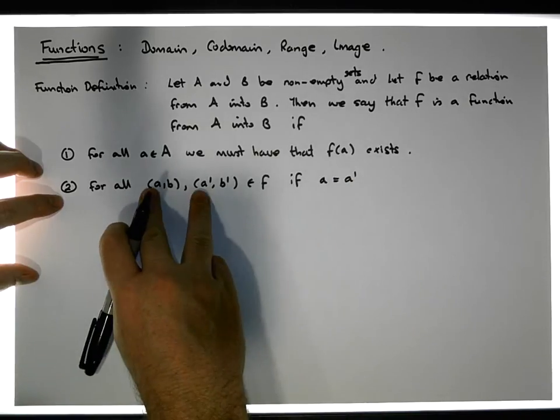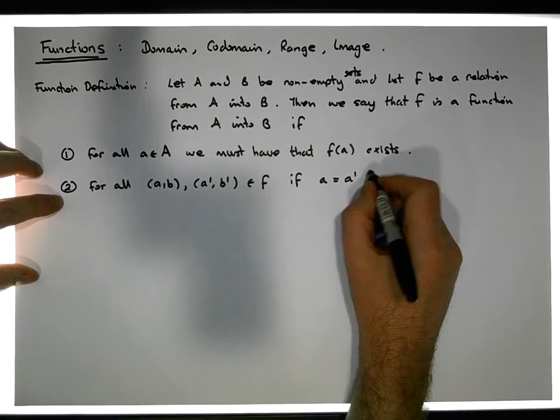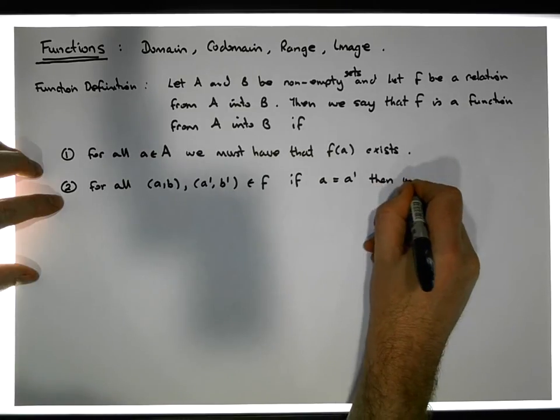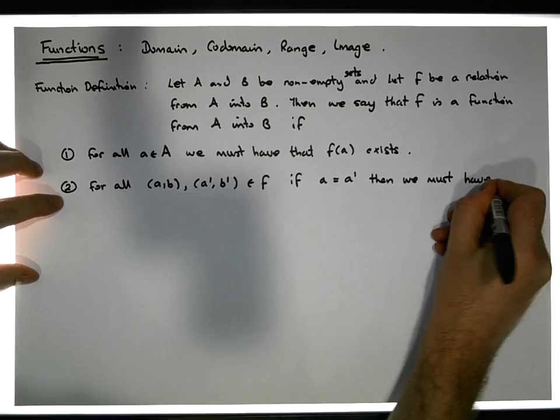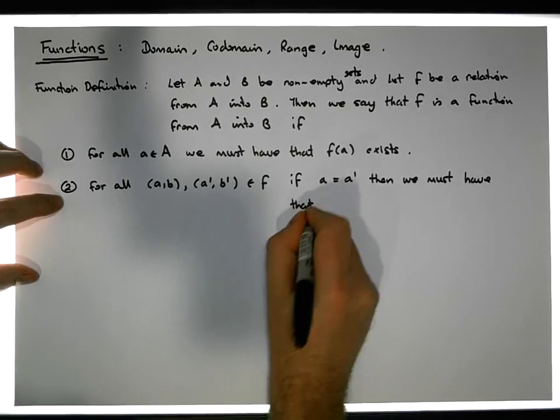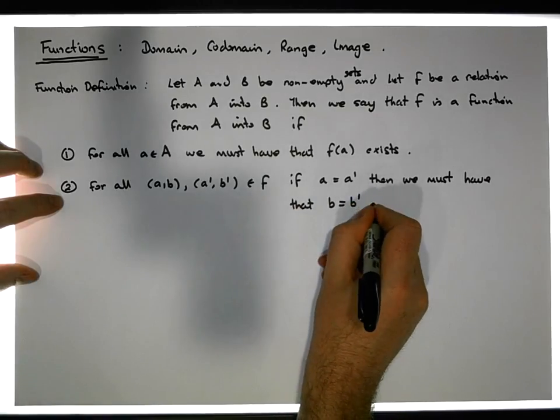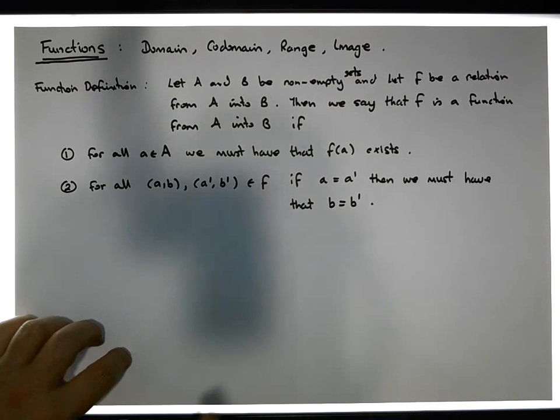in other words, if the first values are the same for these possibilities, then we must have that the b value is equal to the b' value.